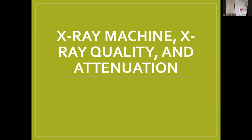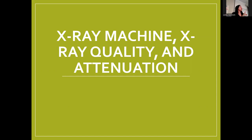We'll talk a little bit more about what's happening inside the X-ray machine, what influences quality, and that has a couple of different elements to it, then attenuation at the very end, and how the images start to show up on the actual sensor. Then we'll talk even more about what affects the picture — contrast, density, and those types of things.